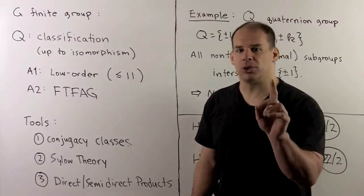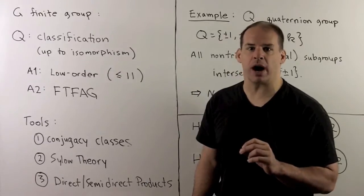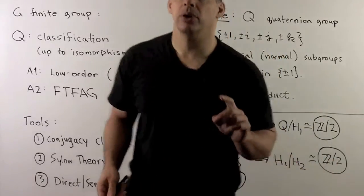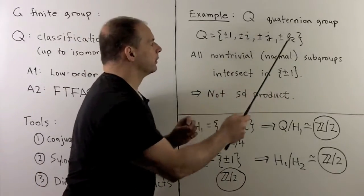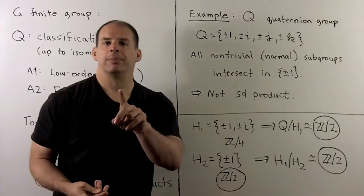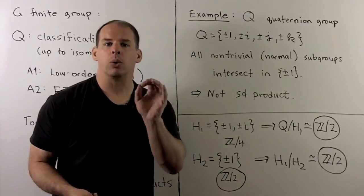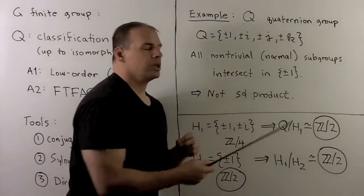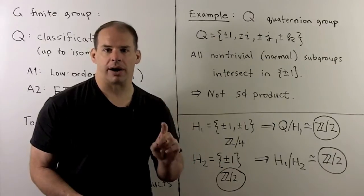Even if we have normal subgroups, we'll still run into problems insisting on a semi-direct product. So, consider the example of the quaternion group. This has eight elements. If we take the intersection of any two non-trivial subgroups, we always get plus or minus one. So we'll never be able to write the quaternion group as a semi-direct product.